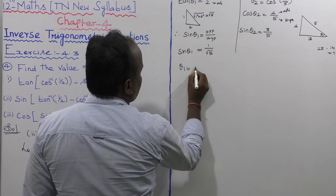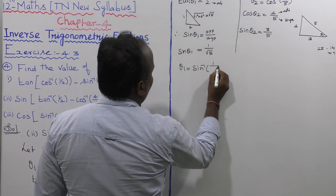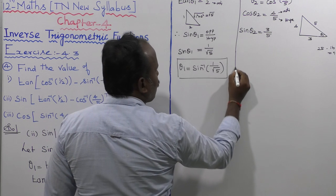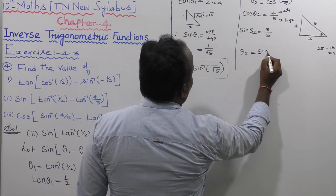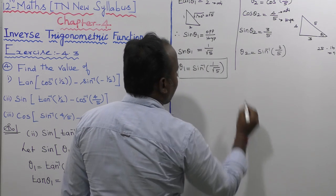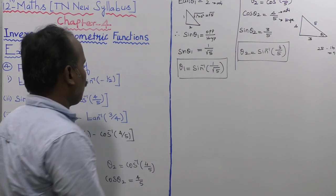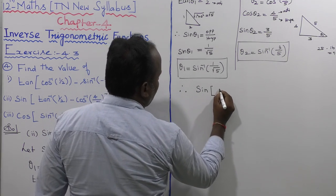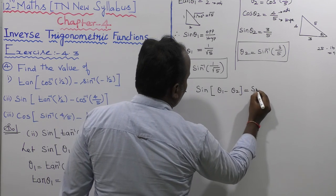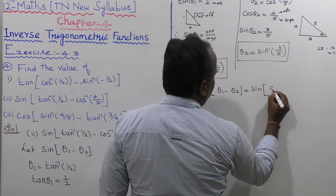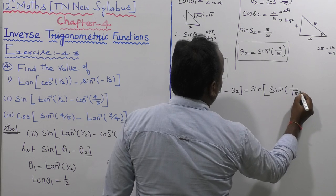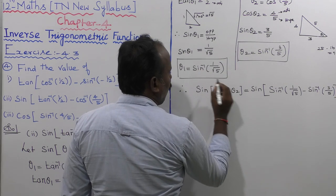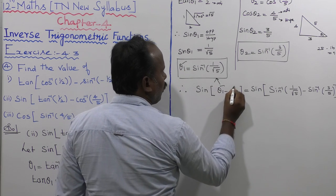To find the value: theta 1 is equal to sin inverse of 1 divided by root 5, and theta 2 is equal to sin inverse of 3 divided by 5. Now let us take the values — sin inverse of theta 1 minus theta 2. That is sin inverse of sin inverse of 1 by root 5 minus sin inverse of 3 by 5. So theta 1 replaces this value and theta 2 replaces this value.